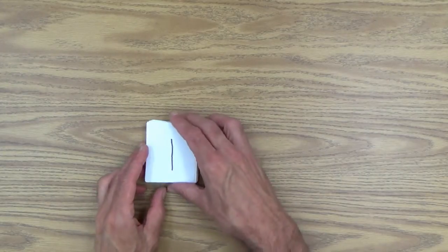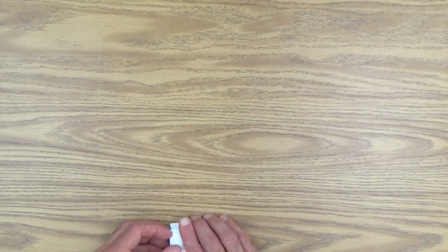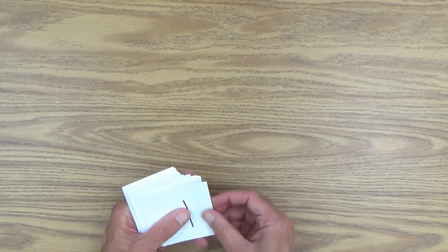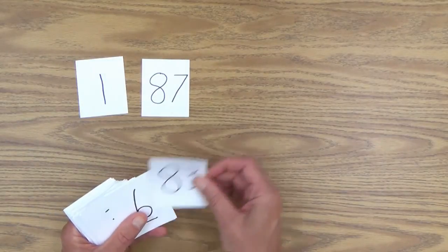And this next activity, also with the set of number cards, is called Numbers in Sequence. And instead of explaining it to you, I will show it to you. First of all, obviously, as I said, I've shuffled up these cards pretty well. And let's start this game with three cards. You put down three cards.